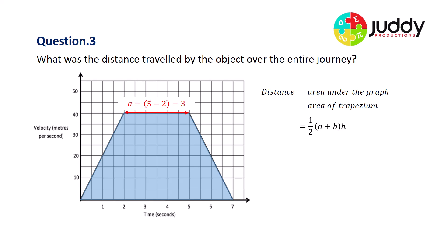Where a is one of the parallel side lengths. So here we see this line, the top part of our trapezium, starts at a time of two and finishes at a time of five. The difference between two to five is three. And b is the other parallel line of the trapezium. It starts at a time of zero and ends at a time of seven. So it has a value of seven. h is the height of our trapezium. So it starts on the vertical axis at zero and goes all the way up to 40. There's a height of 40.